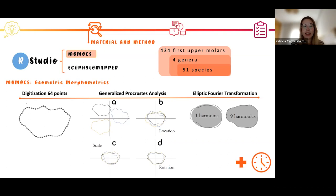To perform this analysis, I digitized 64 equally spaced points along the outline of the M1, the upper first molar, as you can see in this image. Then I obtained 64 XY coordinates and then I applied a generalized Procrustes analysis, or GPA, to minimize the effect of location, scale, and rotation of the sample.